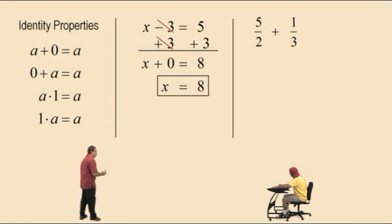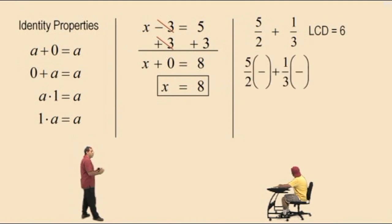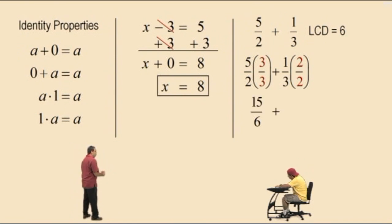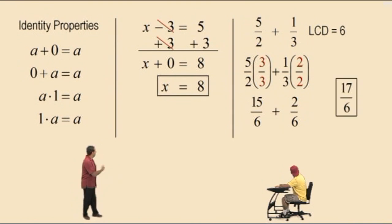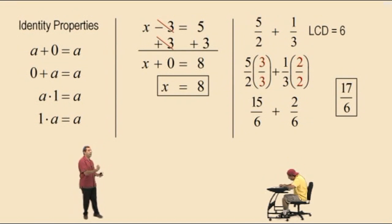The identity property for multiplication is used when we change denominators on fractions. For example, with LCD of 6: multiply 5 halves by 3 over 3 and 1 third by 2 over 2. 3 over 3 and 2 over 2 are both equal to 1. We get 15 sixths plus 2 sixths, which gives us 17 sixths. Notice each fraction was multiplied by 1 — 5 halves times 3 over 3 equals 15 sixths, which is identically equal to 5 halves when reduced.